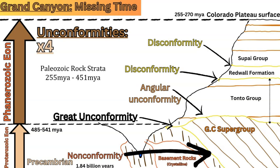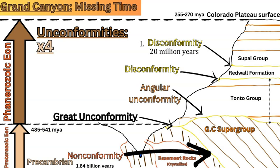There are two unconformities within the Paleozoic rock strata of the canyon wall, and these are both disconformities. The first is between the Supai Group and the Redwall Formation, which is a smaller disconformity — the length of time covered by weathering and erosion was around 20 million years. The base of the Supai Group dates around 320 million years ago and the top of the Redwall Formation is around 340 million years, so it's around 20 million years of erosion and weathering at that location.